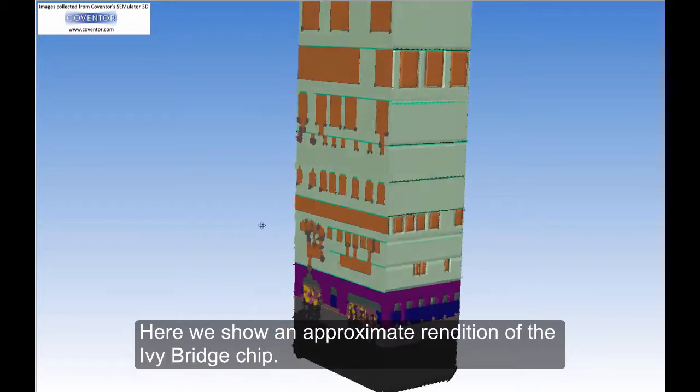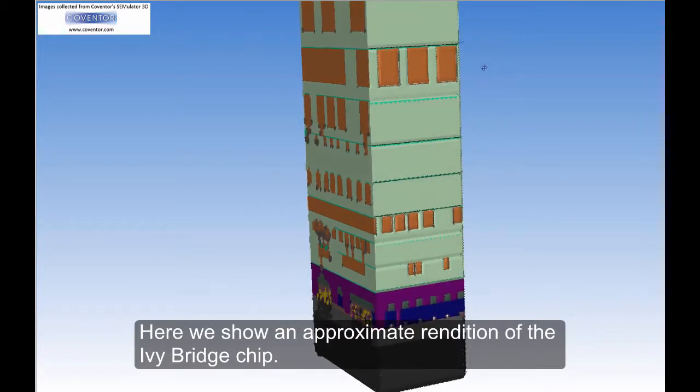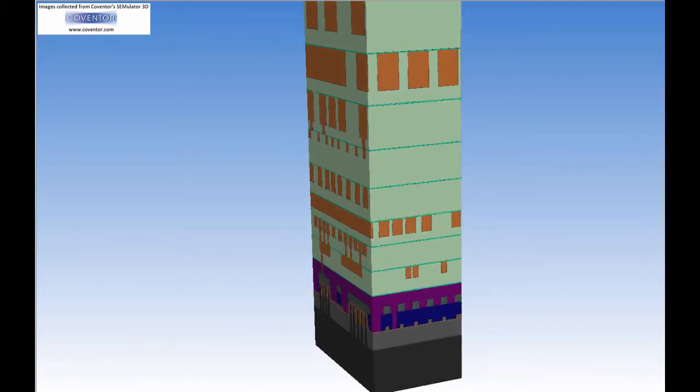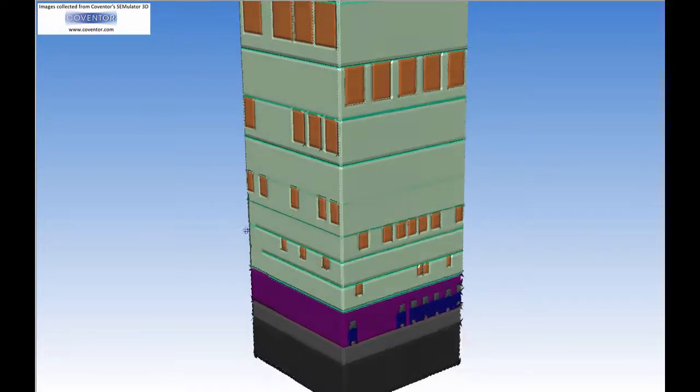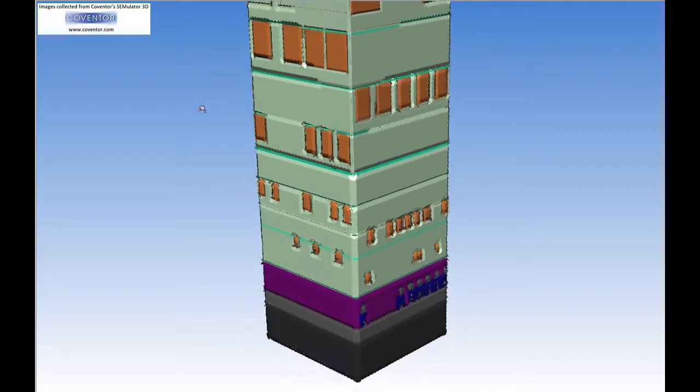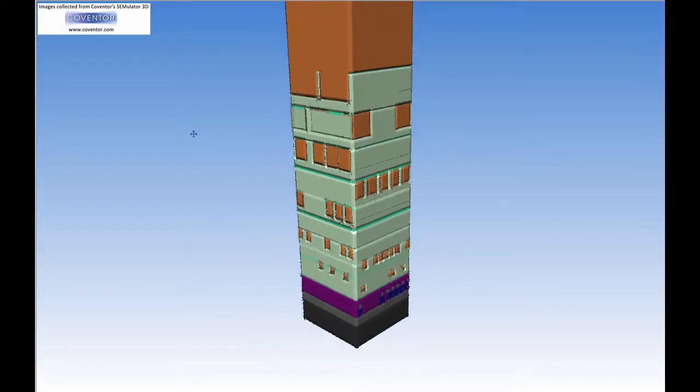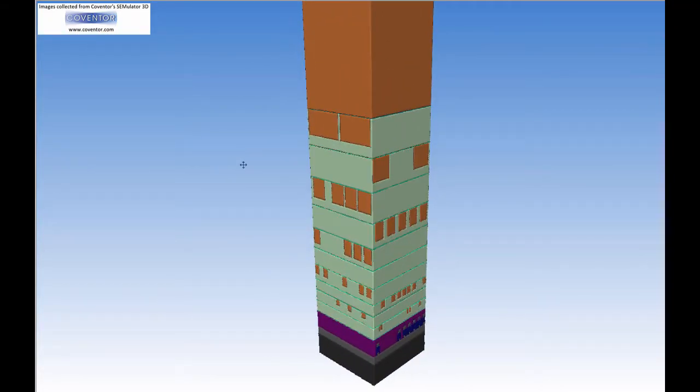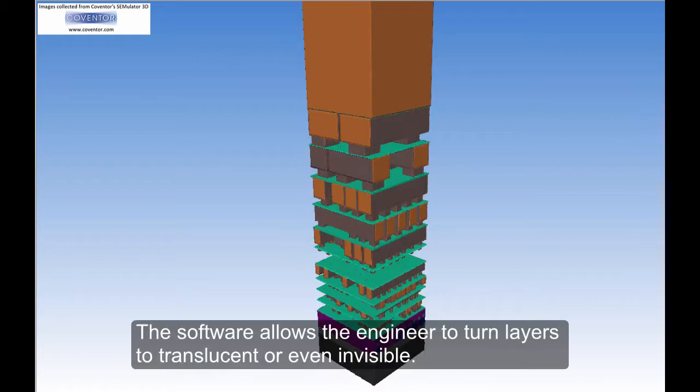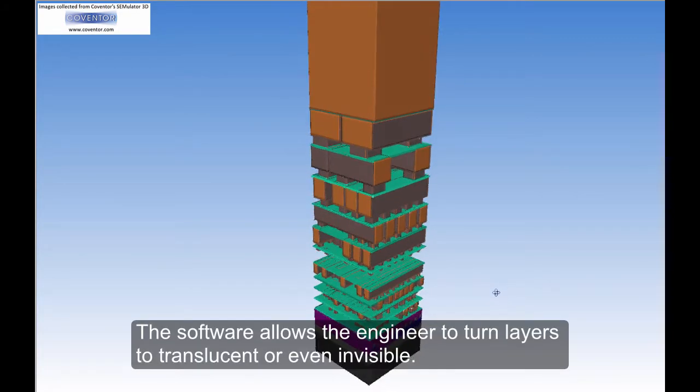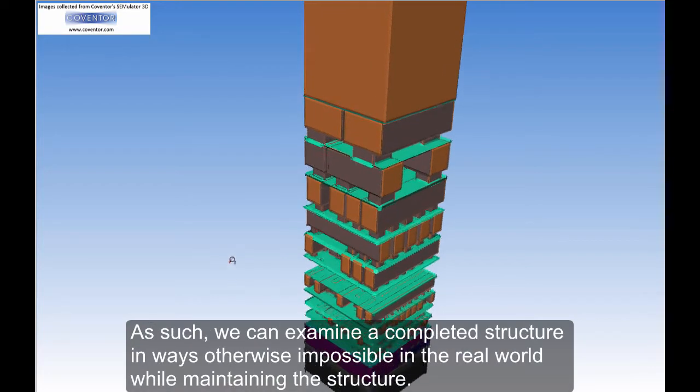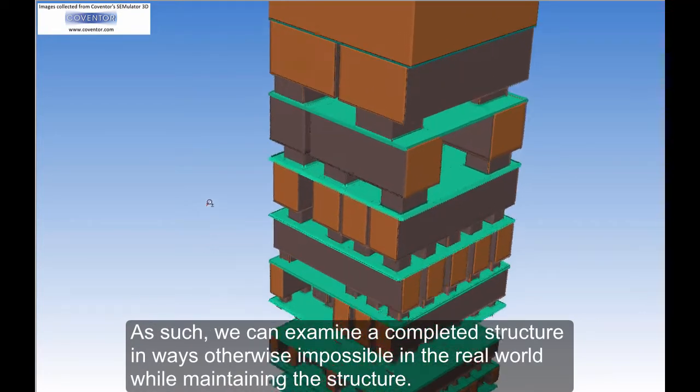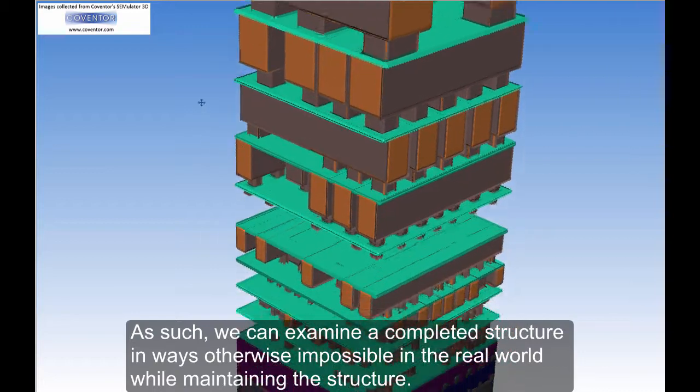Here we show an approximate rendition of the Ivy Bridge chip. The software allows the engineer to turn layers to translucent or even invisible. As such, we can examine a completed structure in ways otherwise impossible in the real world while maintaining the structure.